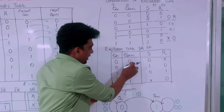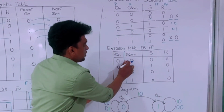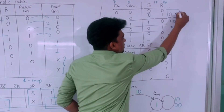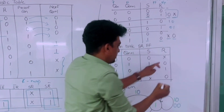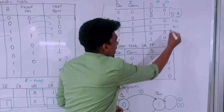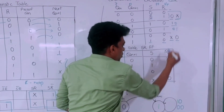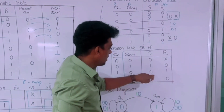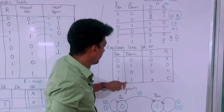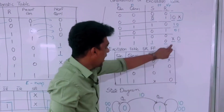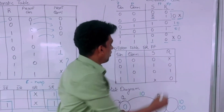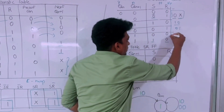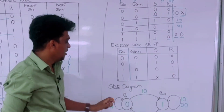The excitation table is summarized by present state and next state. For transition 0→0 we get S=0, R=X. For 0→1 we get S=1, R=0. For 1→0 we get S=0, R=1. For 1→1 we get S=X, R=0.